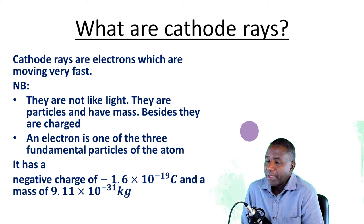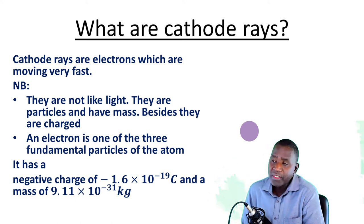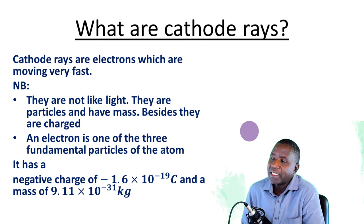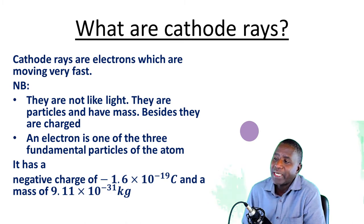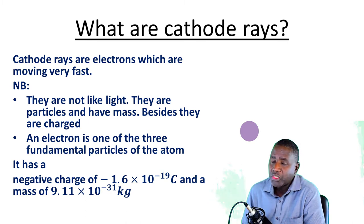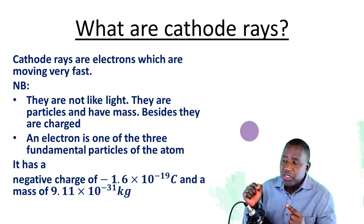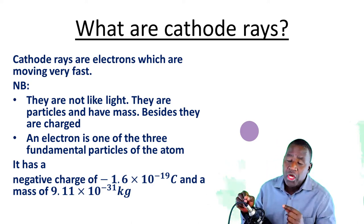Because electrons are particles, they carry a mass of 9.11 × 10⁻³¹ kilograms — very light compared to the proton. We will revisit this when we look at the deflection of these particles in electric fields.